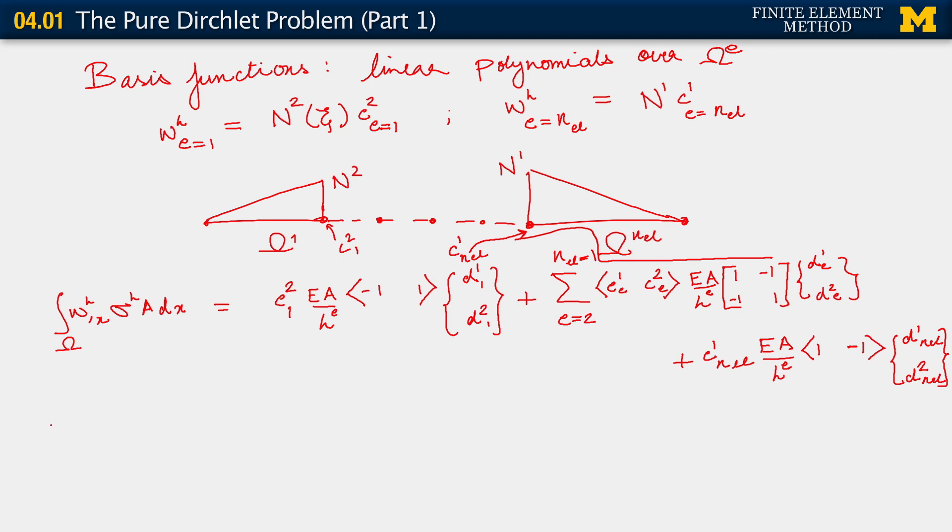And in a related manner, what we will see is that as far as our force contributions are concerned, which come only from our forcing function, there being no traction condition here. Integral W_H F a dx. So just as before, we will get a contribution C_2,1 times F A H_E over 2. This would be the only contribution from element 1.